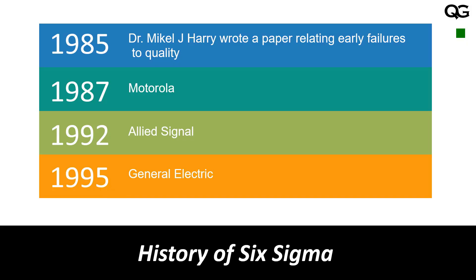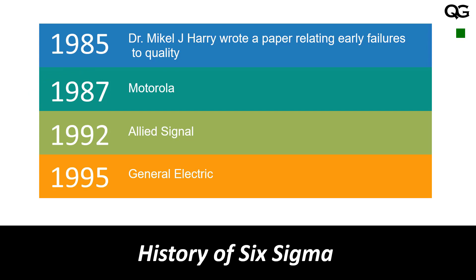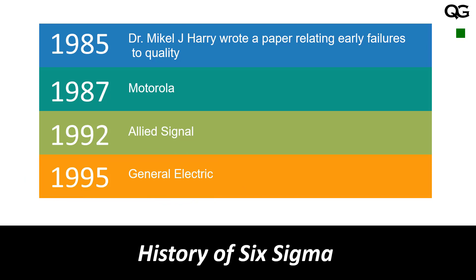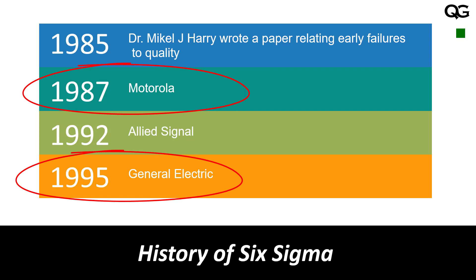When it comes to the history of Six Sigma, a few things you need to remember: Six Sigma was invented by Motorola in 1987. Another company associated with Six Sigma is General Electric — GE implemented Six Sigma in a big way across all their processes, and all managers in General Electric were required to go through Six Sigma training. So Motorola invented it and GE implemented it in a big way.